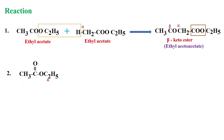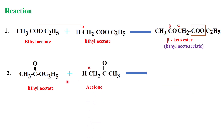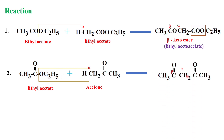For the second reaction, ester plus ketone gives a beta-diketone. Ethyl acetate combines with acetone. The ethoxide group and hydrogen are removed as ethanol, and the remaining group adds to the carbonyl carbon. The functional group present determines alpha and beta positions — the ketone group is at the beta position, so it is called a beta-diketone. The product is acetylacetone.